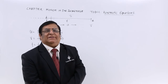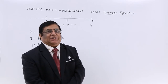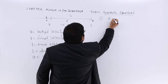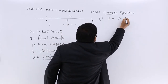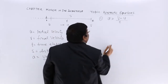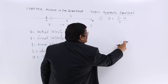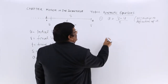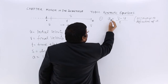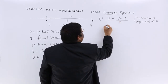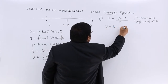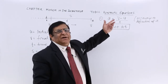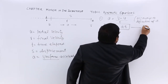First, what is the definition of acceleration? Acceleration is change in velocity per unit time. Mathematically, acceleration equals change in velocity V minus U per unit time T. So in T seconds the change is V minus U, and in 1 second the change will be (V minus U) upon T. Rearranging, V minus U equals AT, so V is equal to U plus AT. This is the very famous first kinematic equation, kinematic equation number 1.